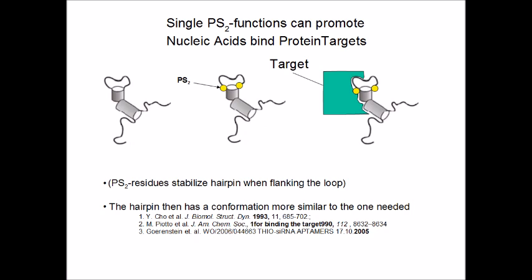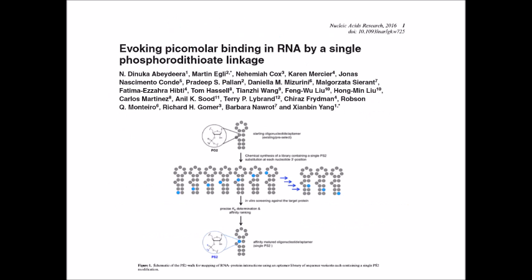The so-stabilized hairpins are known to interact well with protein targets. Exactly this was exploited by Abedira et al. in their paper published in Nucleic Acids Research in 2016. They were using a single dithioate modification to optimize binding to thrombin. They did that by a dithioate walk along the aptamer sequence as shown on this slide. By doing so, they obtained an aptamer with picomolar binding to the thrombin target.